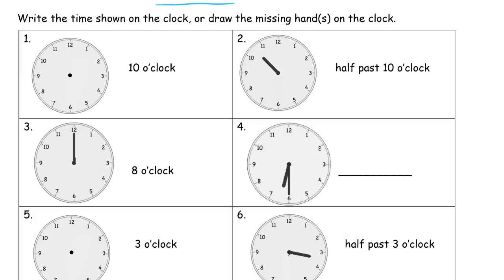This here tells us the time: 10 o'clock, and we need to draw the clock hands. Here's my memory key that I always mention: the word 'minute' is longer than the word 'hour,' so the minute hand is longer than the hour hand.